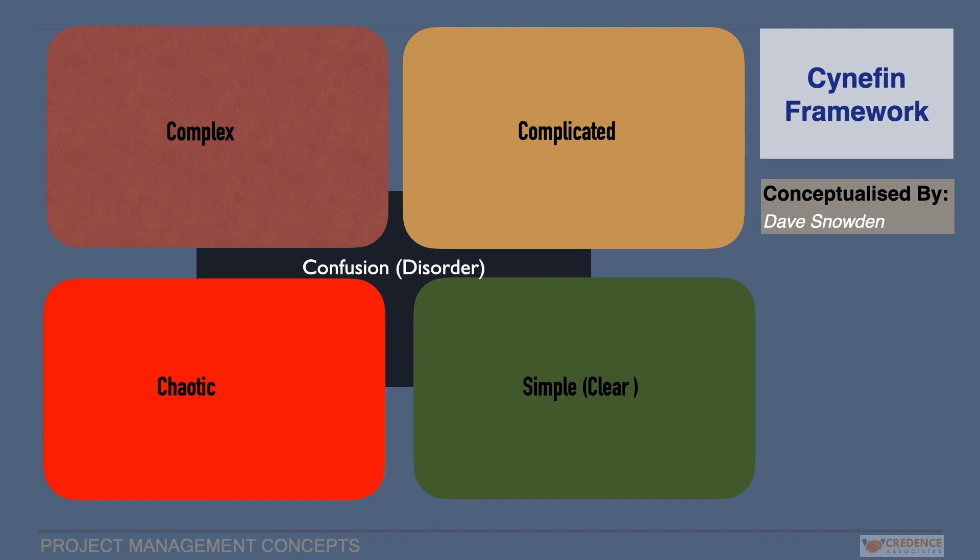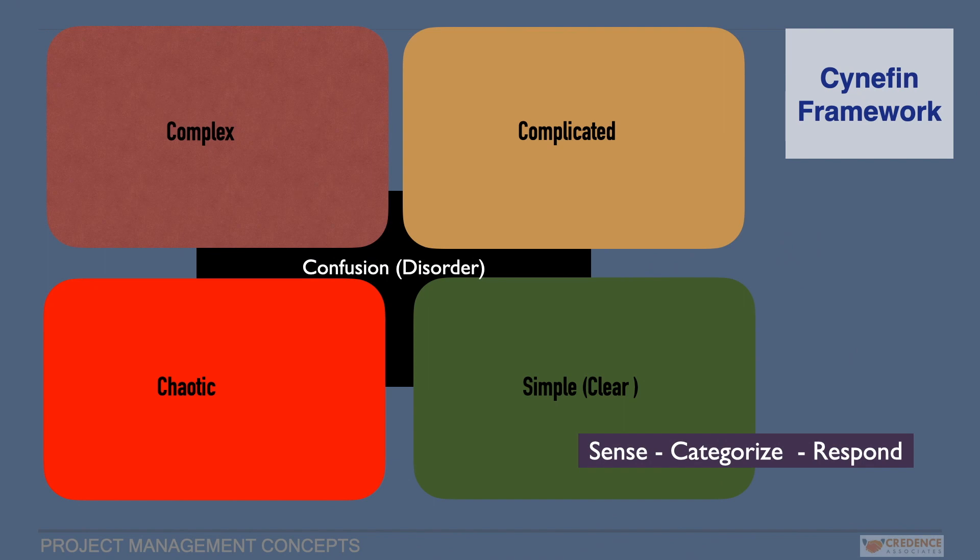The clear domain represents the known knowns. It means the situation is predictable, the cause and effect relation is clear. Best Practices Standard operating procedures can be used for decision-making, which is simple and straightforward. This can be treated as zero-risk zone. The framework recommends sense-categorize-respond.